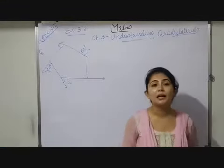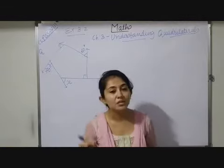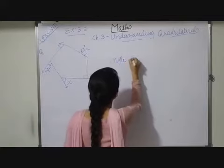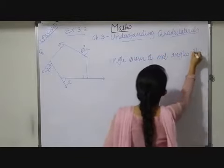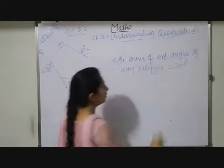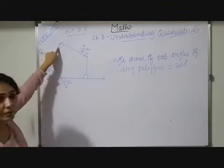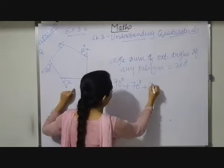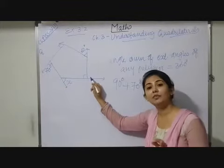One property you have to remember: the angle sum of exterior angles of any polygon is always 360 degrees. So, the sum of all exterior angles equals 360 degrees. Observe: this symbol means 90 degrees, plus 70 degrees, plus x, plus 90 degrees.